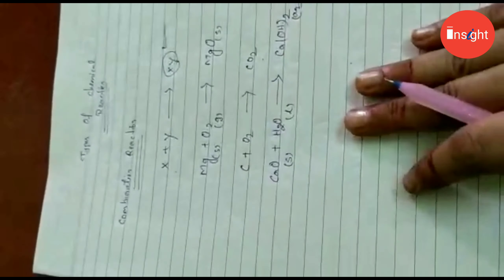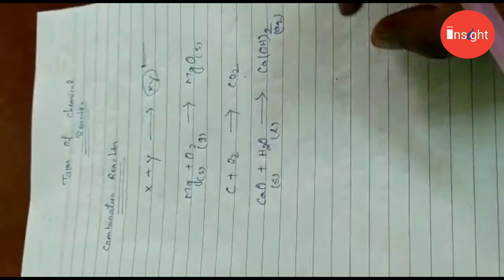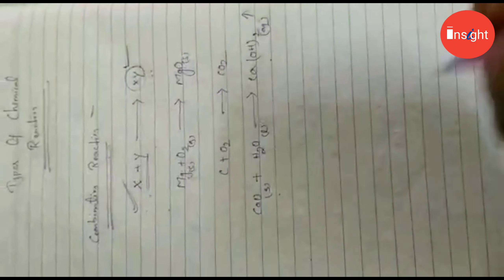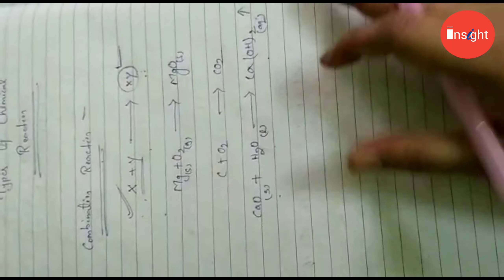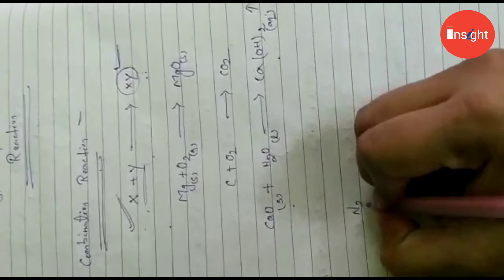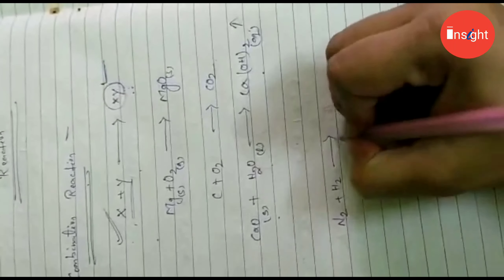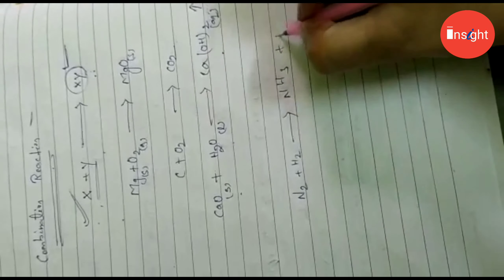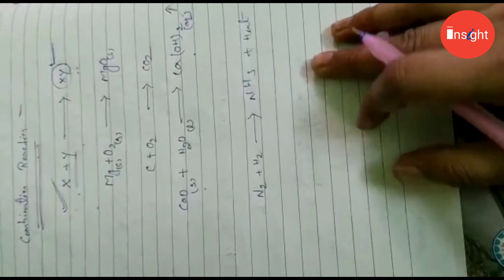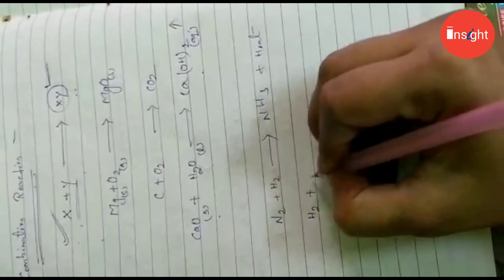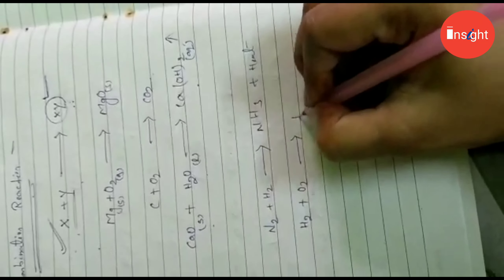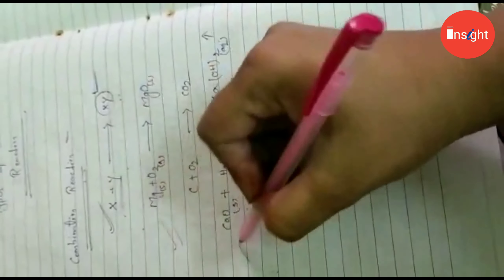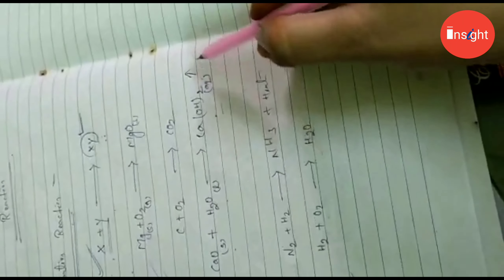In simple terms, a combination reaction is one in which two or more substances react together to give only one product. For example, N₂ + H₂ gives NH₃ (ammonia) along with the release of heat. Similarly, H₂ + O₂ gives water, and heat is also released there.